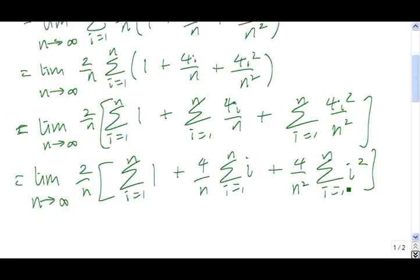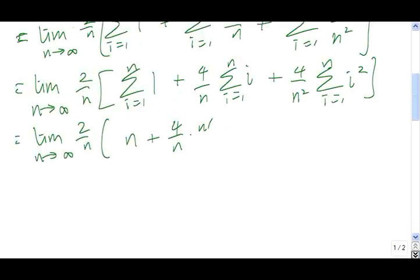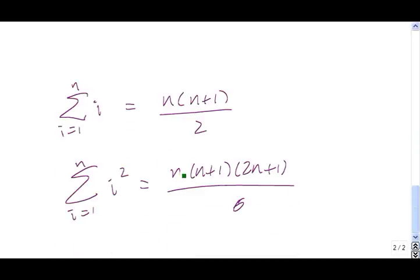Now we're going to evaluate the individual sums. So we have 2 over n times the sum from 1 to n of 1 is 1 plus 1 plus 1 and so on n times, so it's 1 times n or just n, plus 4 over n times the sum from 1 to n of i and that's just equal to n times n plus 1 over 2, then plus 4 over n squared times the sum from 1 to n of i squared and that is just n times n plus 1 times 2n plus 1 all divided by 6.